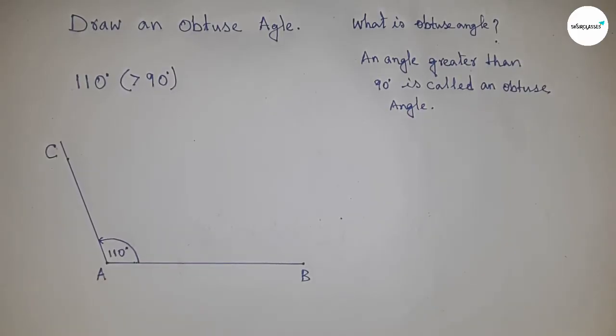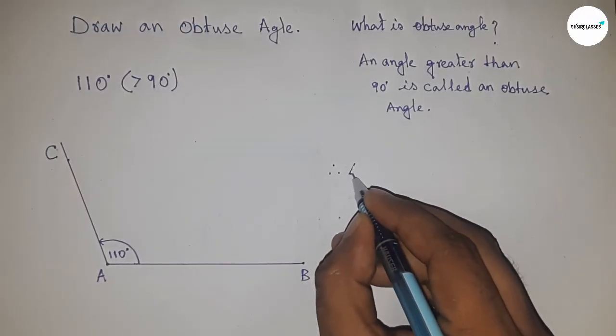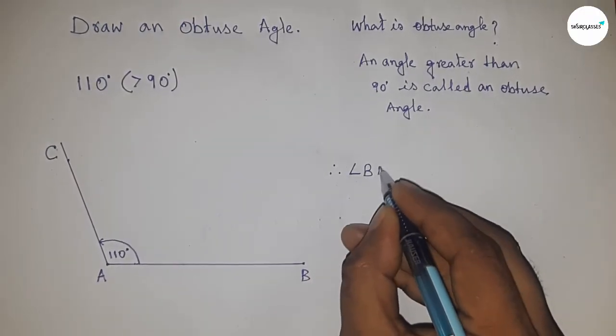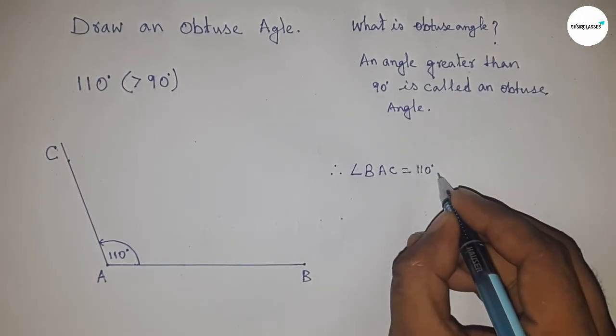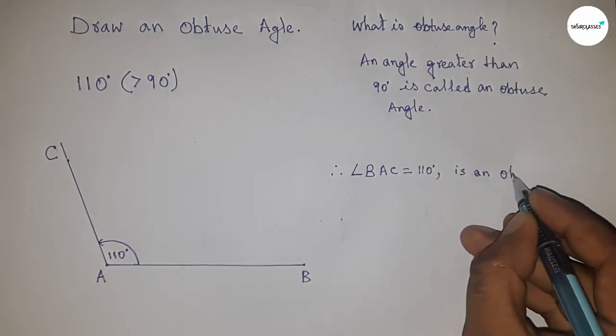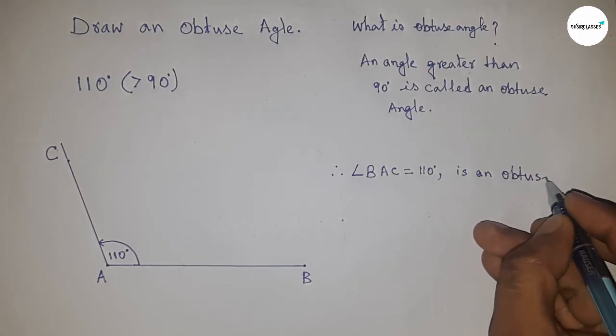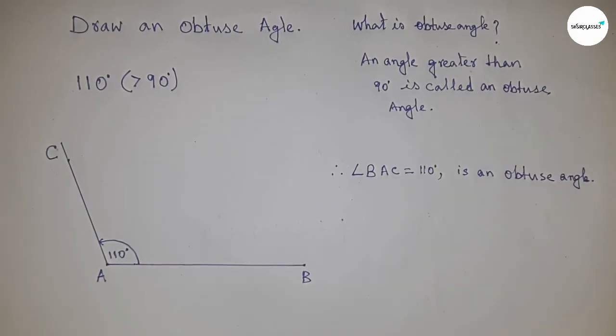Therefore, angle BAC equal to 110 degrees is an obtuse angle. It is obviously an obtuse angle since it is greater than 90 degrees and less than 180 degrees. That's all. Thanks for watching. Please subscribe.